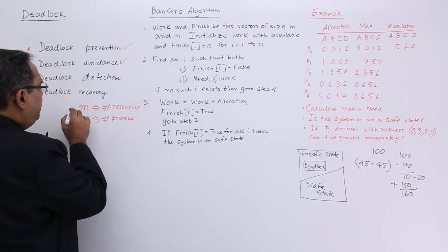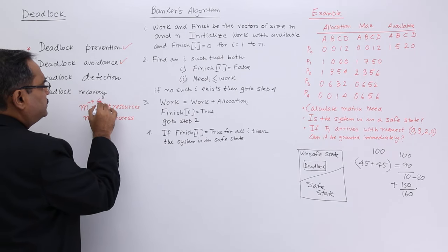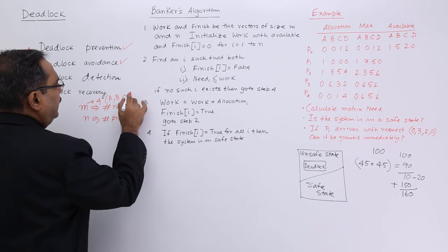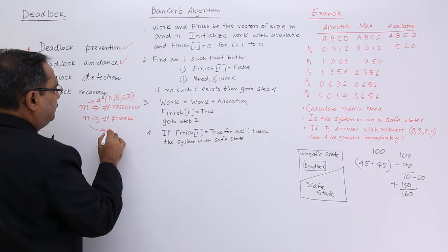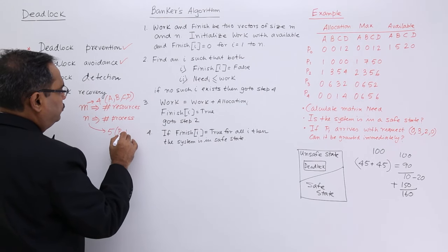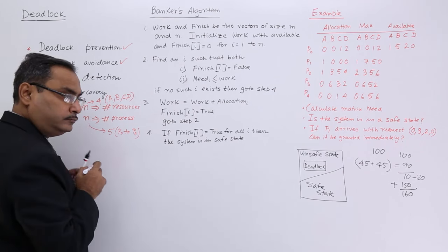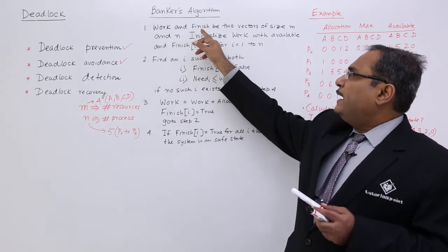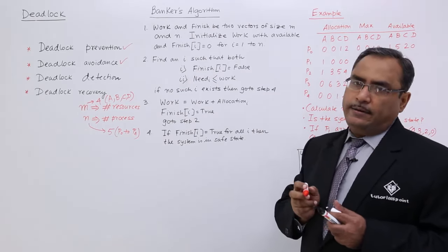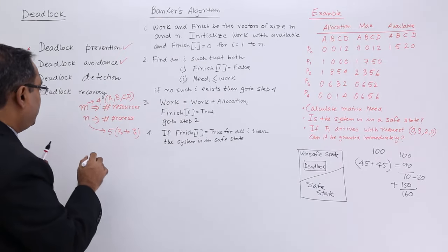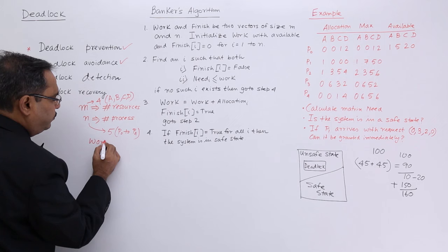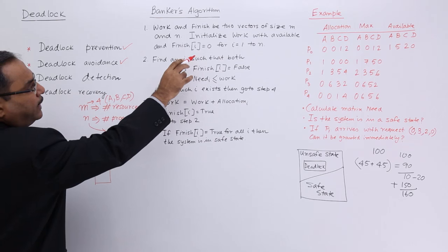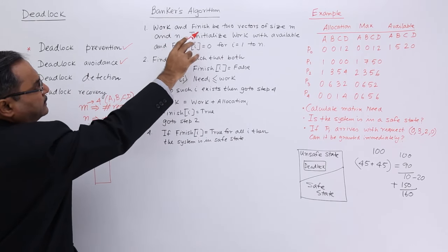For example, suppose we are having 4 resources — A, B, C, D — and 5 processes — P0 to P4. Work and finish are two vectors of size m and n. The work array will have m = 4 locations, and finish will be of size n = 5.